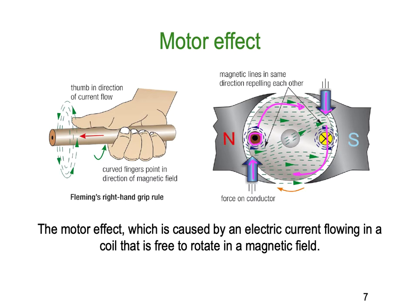We use Fleming's right-hand rule to determine the current direction: the thumb points in the direction of the current in the conductor and the fingers point in the direction of the magnetic field. The motor effect is caused by electric current flowing in a coil that is free to rotate in the magnetic field — sitting on bearings and wound around an armature.